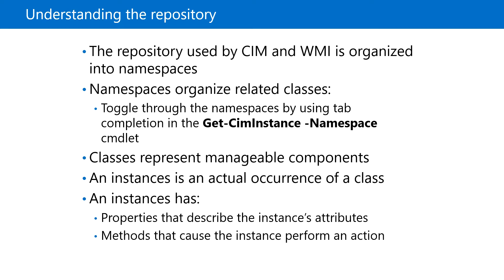Each computer on the network will have slightly different namespaces and classes. For example, a system that has a domain controller running will have a different class called Active Directory, and that class will not exist on any other computer because those systems won't have Active Directory services running. To find out the top-level root-level namespaces, we can use the following command.